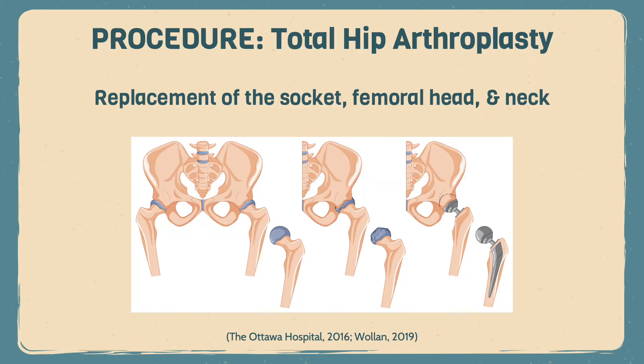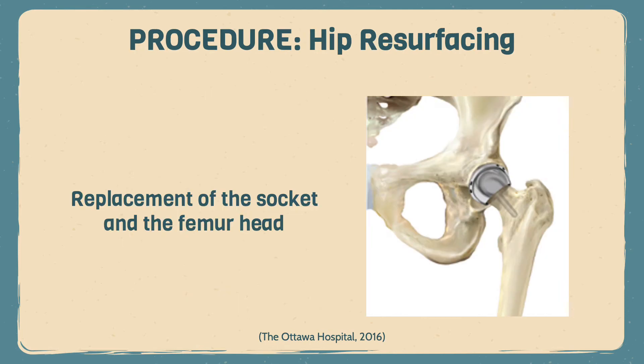Now let us look at the two main procedures of hip replacement. Total hip arthroplasty is the replacement of both sides of the hip joint with a plastic and metal socket and a metal or ceramic ball and metal stem. Hip resurfacing is the replacement of the head of the femur and the socket with a metal or ceramic ball and a metal socket.